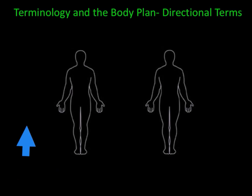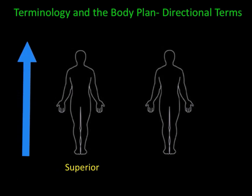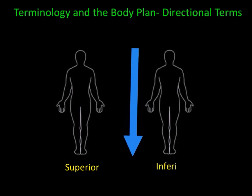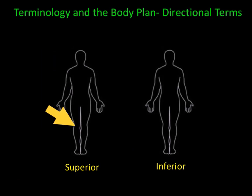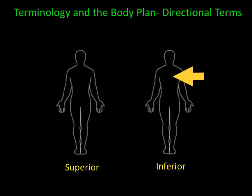Towards the head is superior and towards the feet is inferior. For example, the shoulder is superior to the knee and the hips are inferior to the chest.